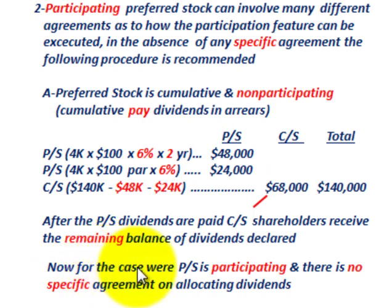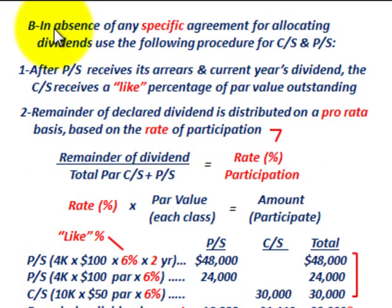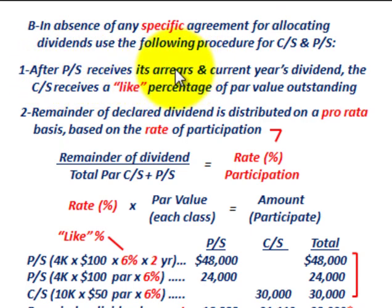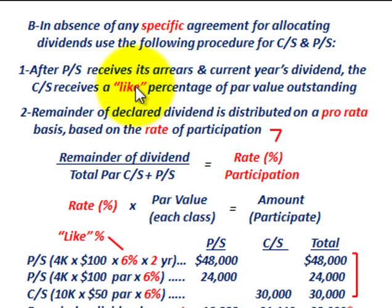Next we're looking at the case where the preferred stock is participating and there is no specific agreement on how to allocate those dividends. In the absence of any specific agreement, the following procedure applies: first, after preferred stock receives its dividend payments for arrears and the current year, the common stock receives a like percentage of its par value outstanding — the same percentage rate that was paid on the preferred stock. Second, the remainder of the declared dividend is distributed on a prorated basis based on the rate of participation.